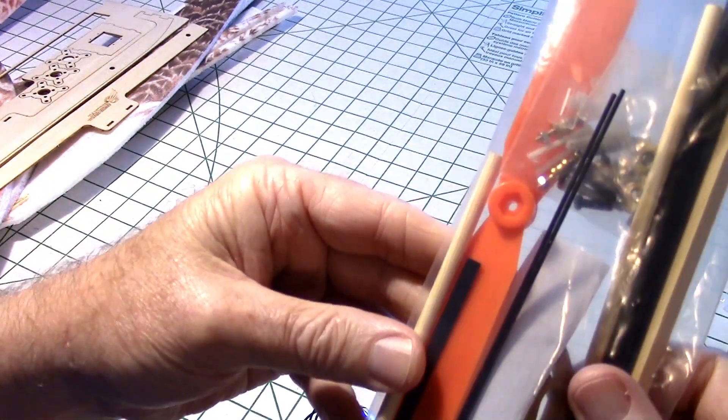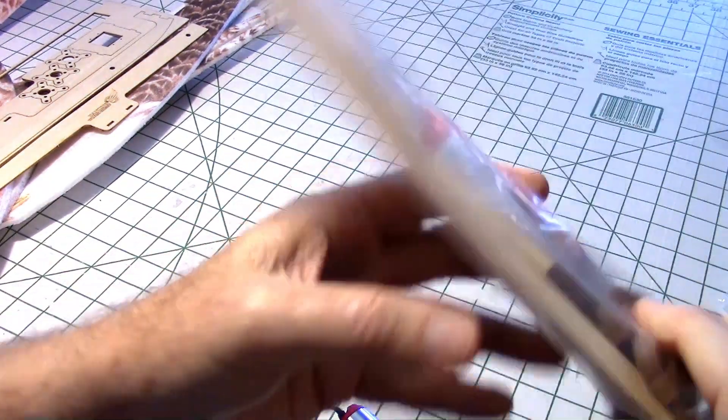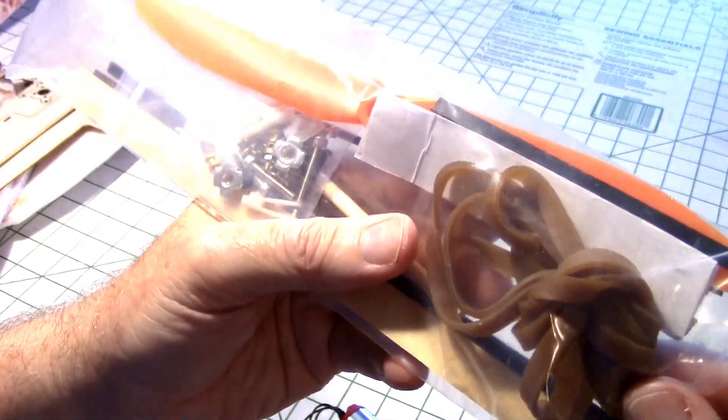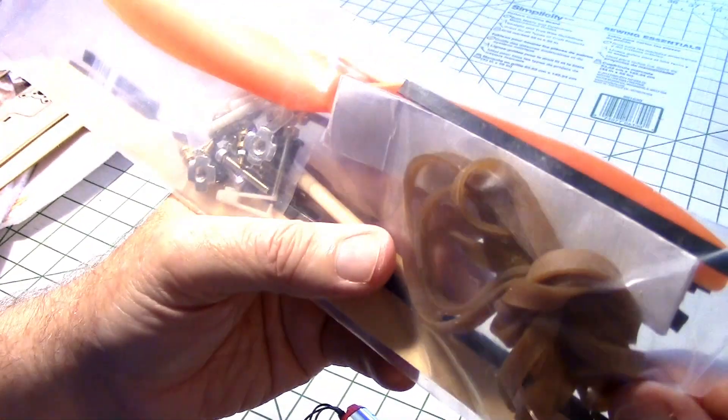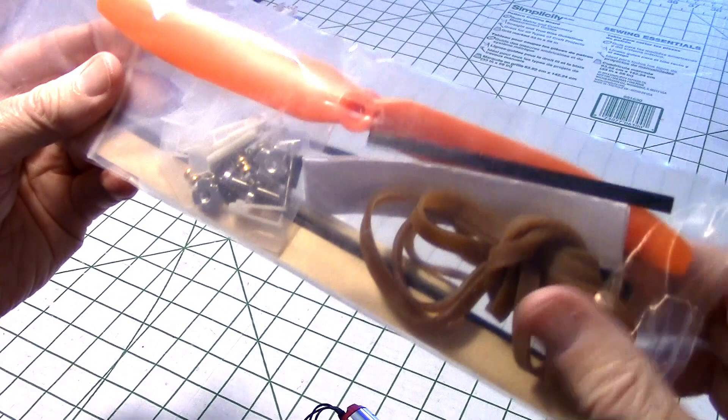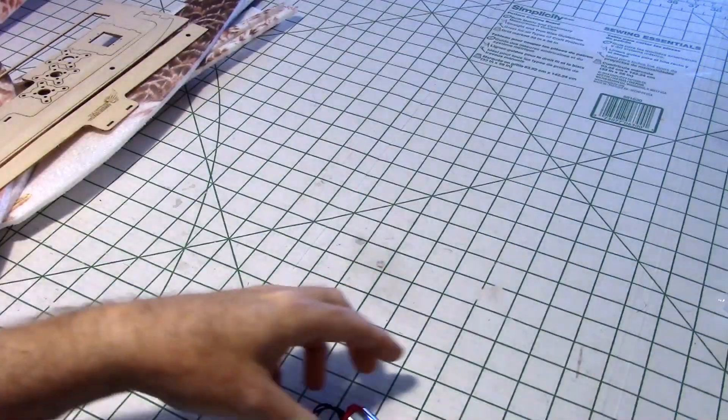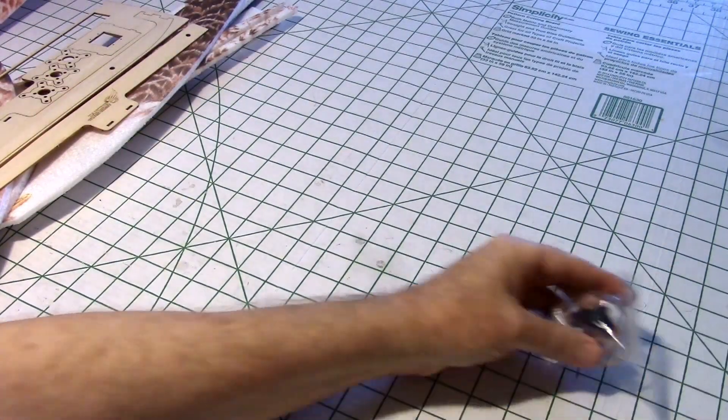And of course there's one of the dowels and there's the other one, so I got both dowels. Yep, looks like everything's there including the, I think it's four rubber bands in there, I hope so. The other one had four rubber bands.